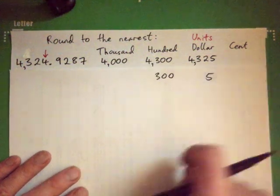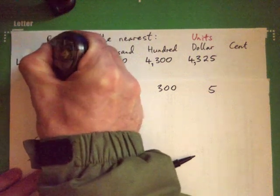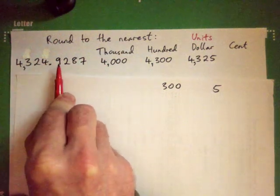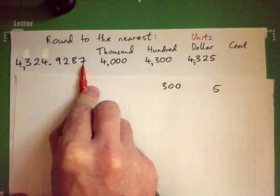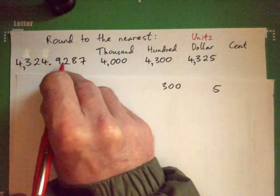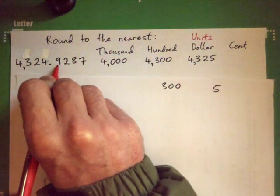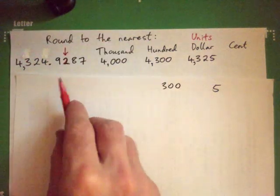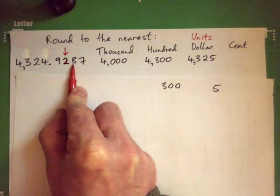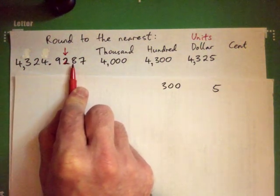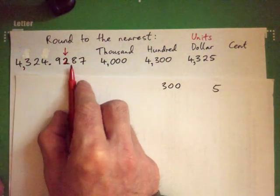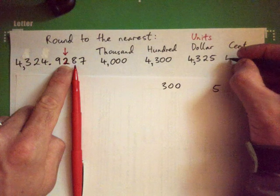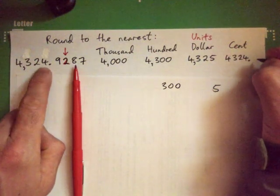So round to the nearest cent. Think about our places here: thousands, hundreds, tens, units, and then tenths, hundredths, thousandths. The nine is kind of tenths of a dollar — like dimes. But the cents are actually the hundredths place. So this is what we have to get to. We look to the digit after that — if it's five or more, you round up; if it's four or less, you round down. So we round up, and that becomes a three. So it's 4,324.93.